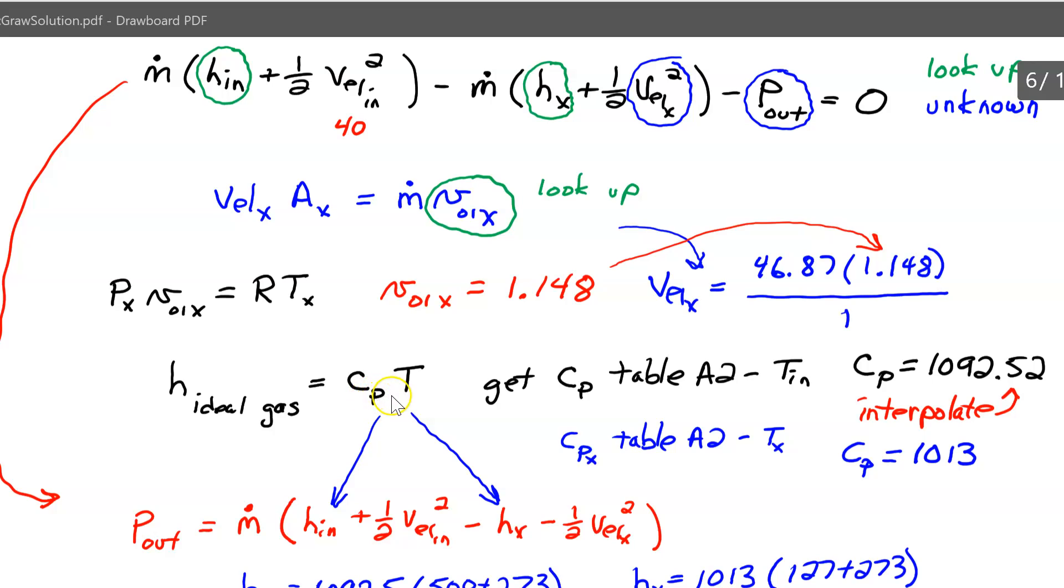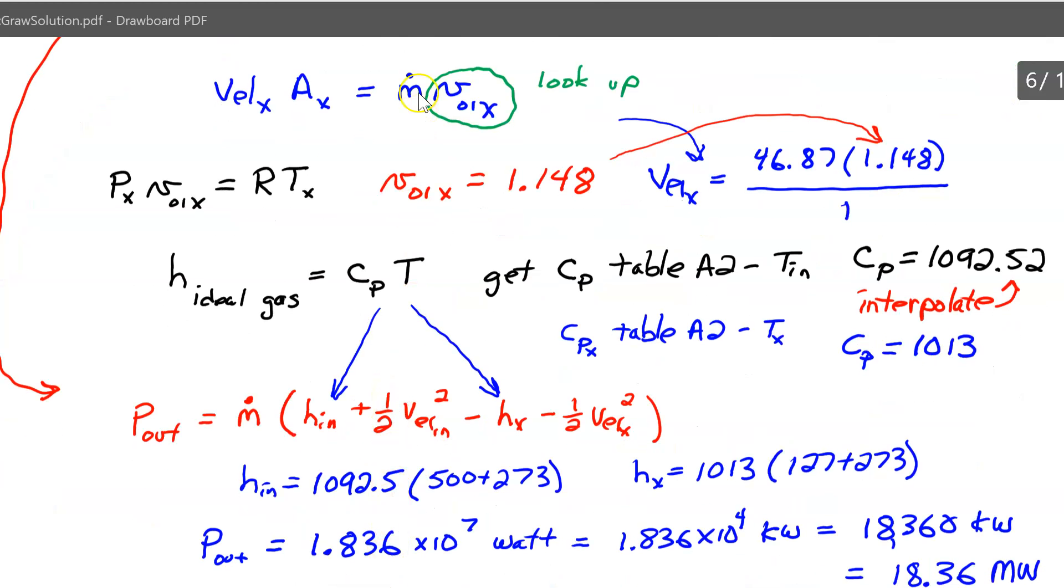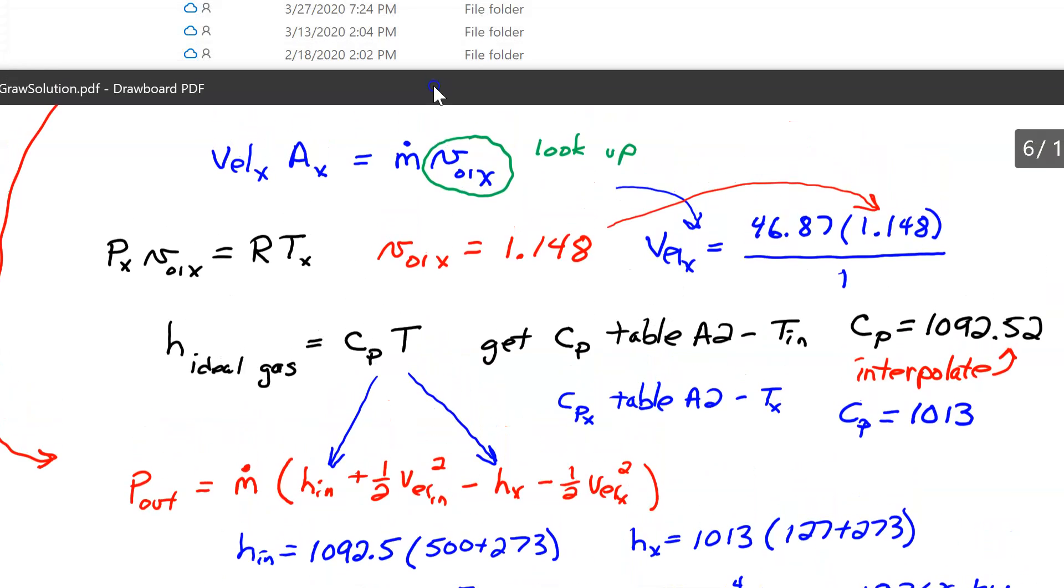you're going to put in c_p times the temperature. So your two h's are right here. So it's the c_p times the temperature in, in absolute, and then c_p times the temperature out in absolute. So those are your h's. You put those numbers in, you've got the velocities, and then you just calculate the power. So see if you can get the correct power, and then I'll show you the answer.